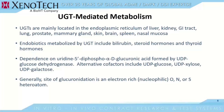In addition to multiple xenobiotics, endobiotics metabolized by UGTs include bilirubin, steroid hormones, and thyroid hormones. Dependence on uridine-5-diphospho-alpha-D-glucuronic acid, which is formed by UDP glucose dehydrogenase, is a highlight of the enzyme. Alternative cofactors include UDP glucose, xylose, or galactose. Generally, the site of glucuronidation is an electrophilic or nucleophilic oxygen, nitrogen, or sulfur heteroatom.